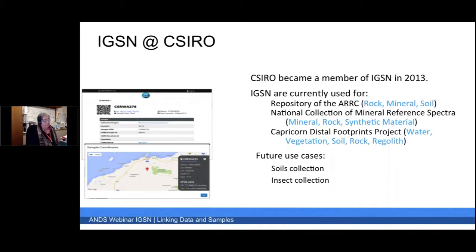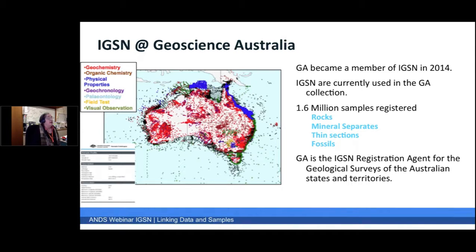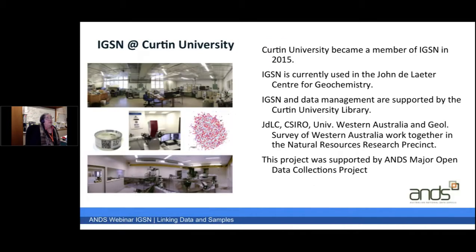That's why we now refer to it as IGSN and not just the International GeoSample Number, because it is certainly being used more broadly. Geoscience Australia has the second largest collection of registered samples in the world — 1.6 million samples covering mineral separates, rocks, thin sections, and fossils. Geoscience Australia is also about to become the registration agent for the Geological Surveys of the States and Territories. Curtin University has a different use case, using it more for tracking samples and sample splits through the laboratory — and ANDS sponsored the development of this project in collaboration with the Curtin University Library.